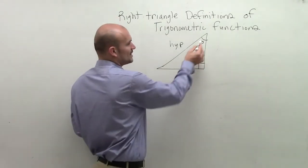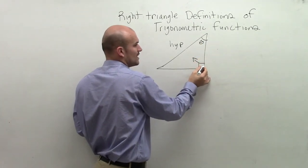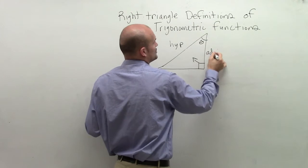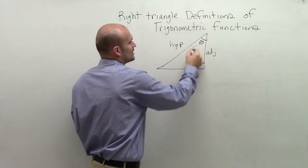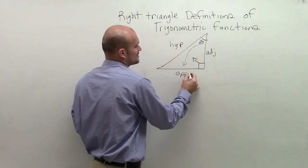When I pick an angle theta, the side that's between theta and my right angle is what I like to call my adjacent side. And the side that's directly across from my angle is what we're going to call the opposite side.